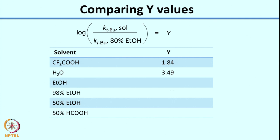For 100% ethanol divided by 80% ethanol, the Y value will be negative because the numerator rate is actually lower than the denominator rate. 98% ethanol would also be negative but less negative than 100% ethanol. 50% ethanol will be positive because it has a greater amount of water compared to 80% ethanol. Comparing with 50% formic acid: since formic acid is more polar than ethanol, you would see a value greater than 50% ethanol.